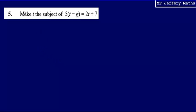This is question 5. Here we're asked to make t the subject of 5 bracket t minus g, which is equal to 2t plus 7. Now, when we're asked to make t the subject, what we're aiming to do is we're trying to get to a situation at the end where we've got t is equal to something. So what we're going to have to do is we're going to have to rearrange this formula to make t, to get t on its own.